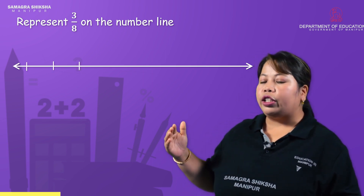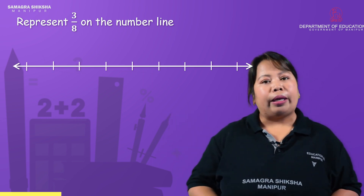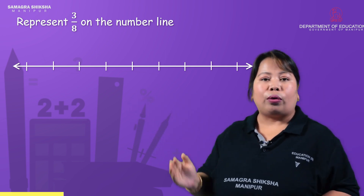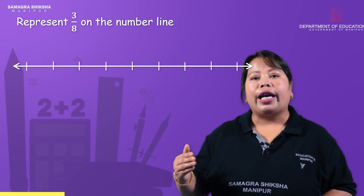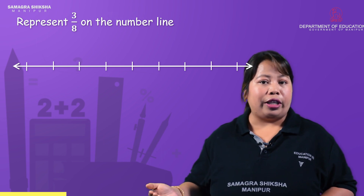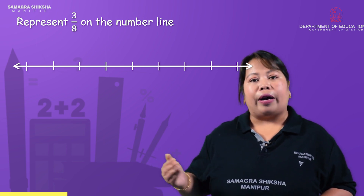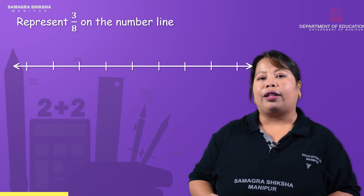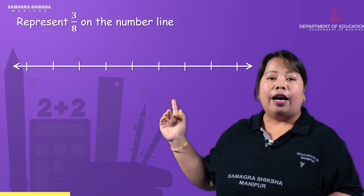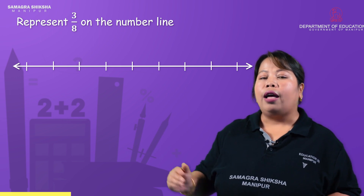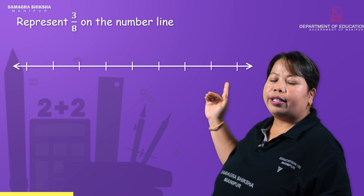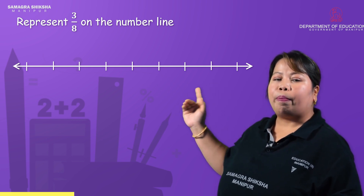Let's divide the line into 8 parts. You can use 8 parts. If you have 8 parts, you have to divide the line into 8 equal parts. Why 8 parts? Because 3/8 has a denominator of 8, so the same line is divided according to the denominator.